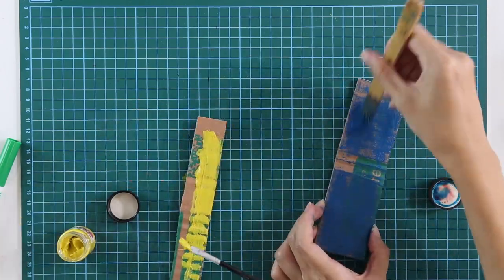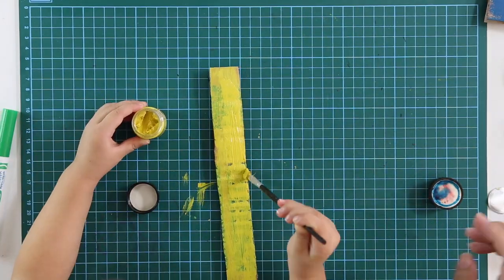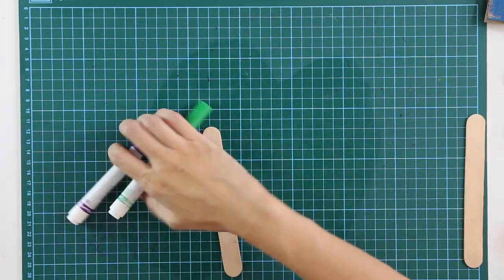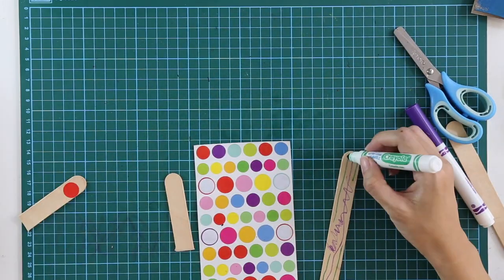After painting, you can leave it one side to dry. In the meantime, we will make the next craft which is using tongue depressors to make castanets. For this, you will need two tongue depressors.